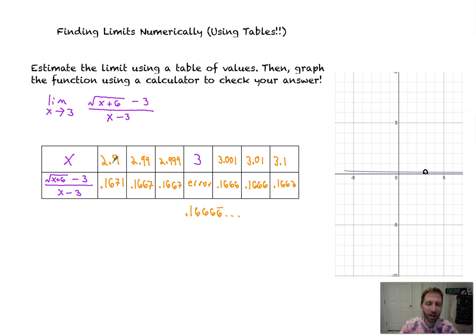Numerically, as we plug in numbers getting closer to 3 from the left, getting closer to 3 from the right, both of those values are approaching the same y-value of about 0.16 repeating. And we see on the graph here that we are very close to that value as we approach from the left side and right side of x equals 3, which is approximately 0.16 repeating. That's it. That's all about finding limits numerically. See you in the next video.